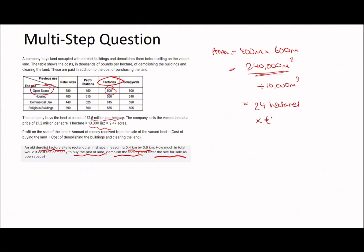Buying the land at £1.6 million per hectare: 24 times £1.6 million equals £38.4 million. I typed that into the calculator — I did not do that in my head! Then we need to add demolishing and clearing the site.